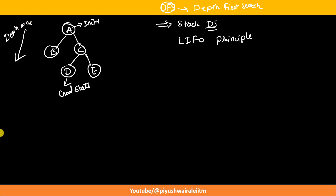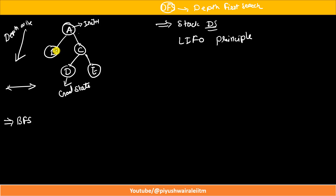In the case of Breadth First Search (BFS), we explore each node at each level — that is horizontal, breadth-wise. But in the case of DFS, we try to explore the node as far as possible. We go deeper until the end state is reached or we find the goal state. DFS works on a stack data structure using the Last In First Out principle.